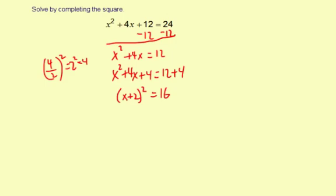Now that the equation is written as a square of a binomial, I can solve by using the square root method. Take the square root of both sides. x plus 2 equals plus or minus the square root of 16, so x plus 2 equals plus or minus 4.